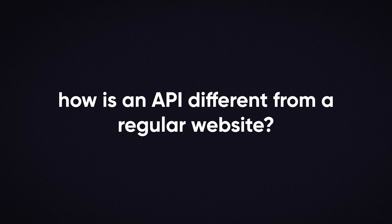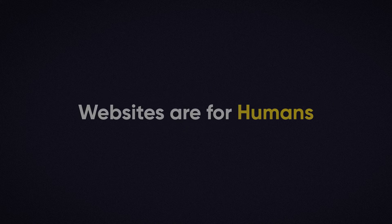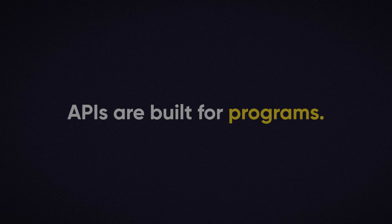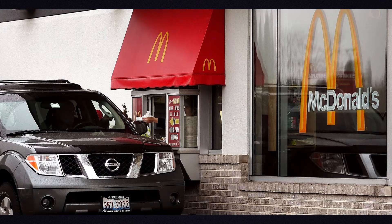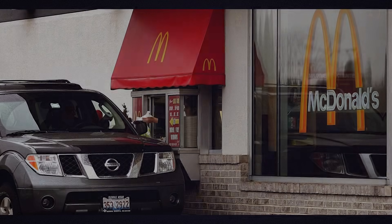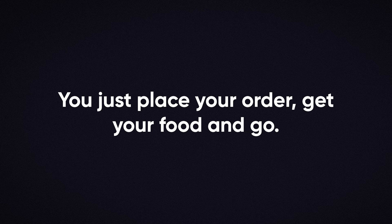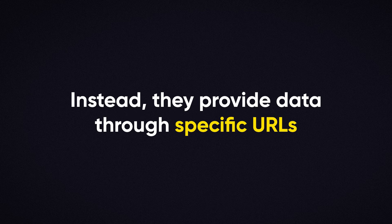Now you might be wondering, how is an API different from a regular website? The main difference is that a website is built for human users, while an API is built for programs. Think of it this way: a website is like a restaurant with a dining area — it's designed for people to walk in, sit down, and enjoy a meal. An API, on the other hand, is like a drive-thru. There's no need for a dining space; you just place your order, get your food, and go. APIs don't have front-end interfaces like websites do. Instead, they provide data through endpoints — specific URLs that applications can call to get the information.